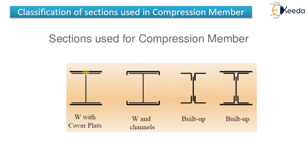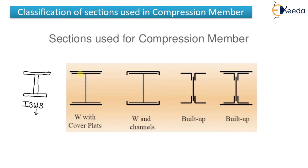Another section used for compression members is the W section with cover plates. 'W' refers to the wide flange beam, designated as ISWB (Indian Standard Wide Flange Beam). Cover plates are provided above and below the I-section to increase its capacity.